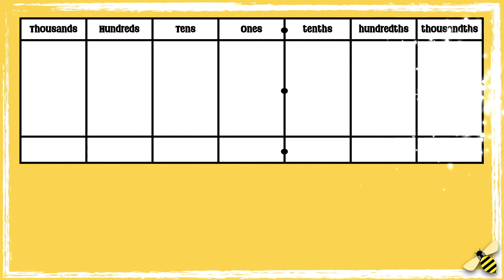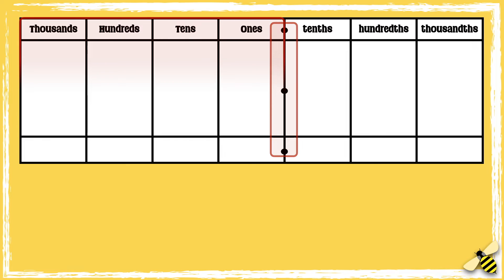Here is a place value grid. Tenths, hundredths, and thousandths sit beyond the decimal point. So before the point, we have the whole number, and after the point, we have the part.